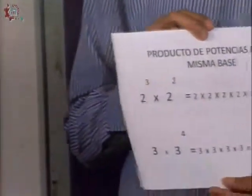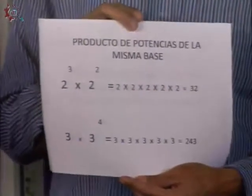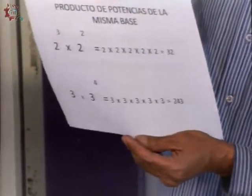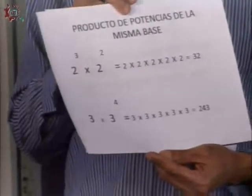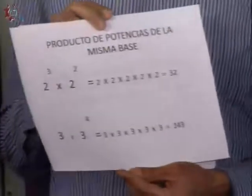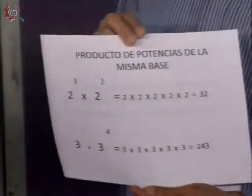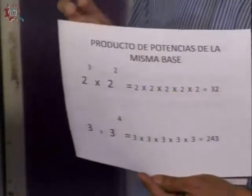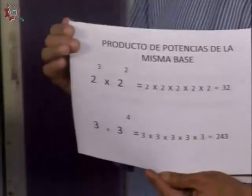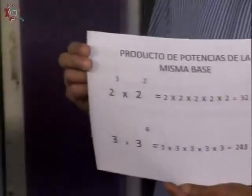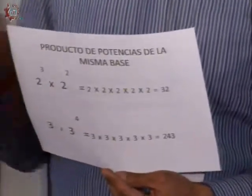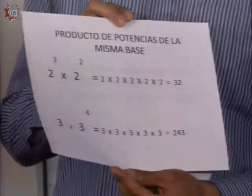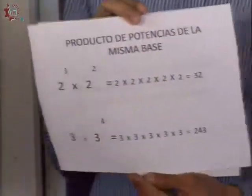El producto de potencias de la misma base. Fíjense cómo se desarrolla. Por ejemplo, dos elevado al cubo por dos elevado al cuadrado. Se tienen que fijar que en este caso la base, que es dos, es la misma. Hacemos la multiplicación del dos tres veces, hacemos la multiplicación del dos dos veces. En total son cinco veces. Yo resuelvo mi multiplicación y esta me da treinta y dos.